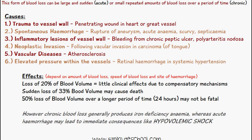Conversely, a 50 percent loss of blood volume over a longer period — say 24 hours — may not be fatal, showing that effects really depend on whether the loss is acute or gradual. Chronic blood loss generally produces iron deficiency anemia, while acute hemorrhages may lead to immediate consequences like hypovolemic shock.